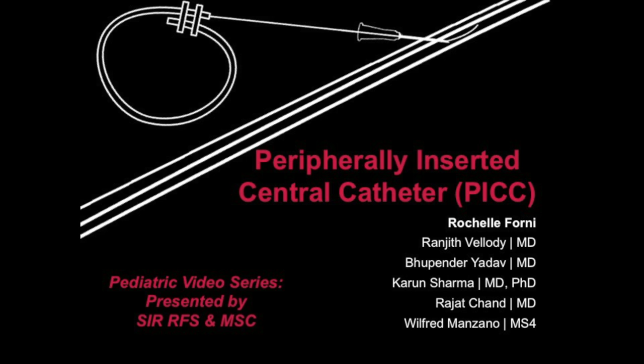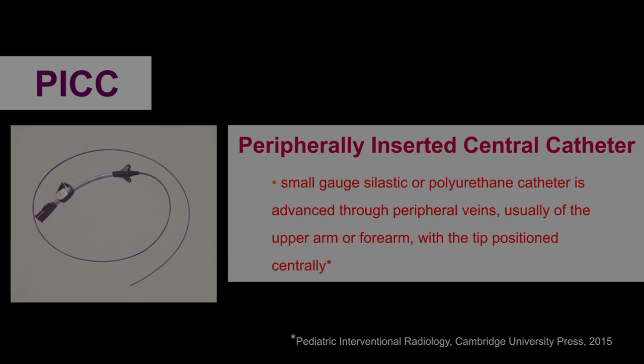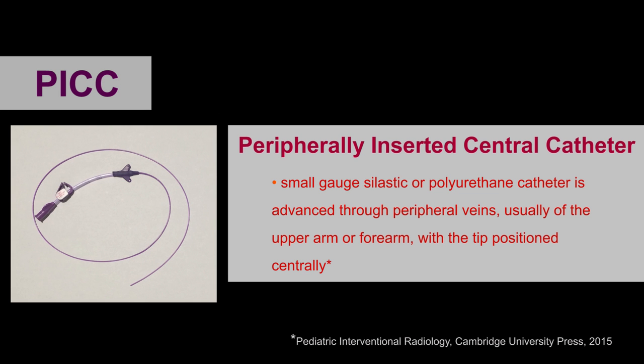In this video, we will discuss peripherally inserted central catheters in pediatric patients. The PICC is a small gauge silastic or polyurethane catheter that is advanced through peripheral veins, usually of the upper arm or forearm, with the tip positioned centrally.